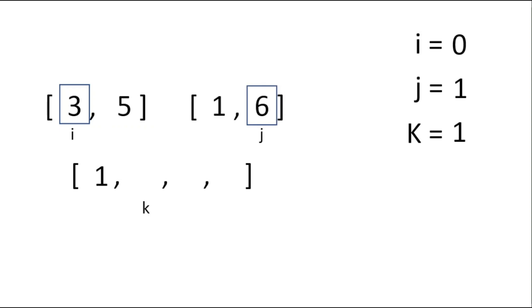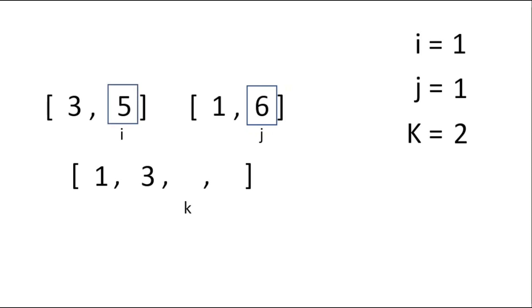We also increment k. The i stays the same because we still haven't added three, and we compare it with the new element at j which is six. We add the minimum — which is three — to our merged array. After adding three we increment i to move to the next index and also increment k. Now we compare j with the new value at i which is five; five is less so we add five.